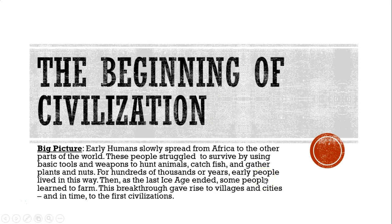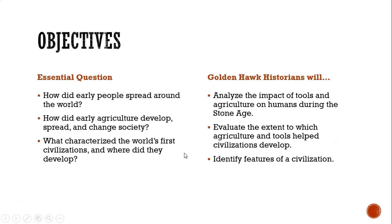Early humans started to spread from Africa to other parts of the world and struggled to survive, but they used agriculture and other tools to help them make it through. The essential questions we'll be focusing on are: how did early people spread around the world? How did early agriculture develop, spread, and change society? And what characterized the world's first civilizations, and where did they develop? Golden Hawk historians will analyze the impact of tools and agriculture on humans during the Stone Age, evaluate the extent to which agriculture and tools helped civilizations develop, and identify features of a civilization.